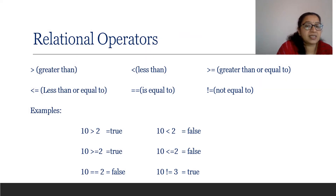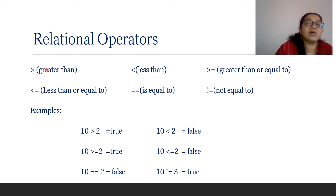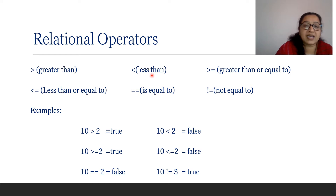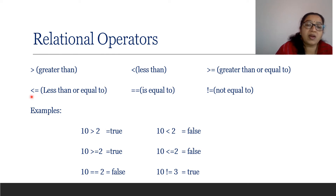Relational operators — we already discussed these in the last class. Relational means comparison; we can compare two numbers. The operators used for comparison are: greater than sign, less than sign, greater than or equal to, and less than or equal to. In maths you write the greater than sign with a bar underneath, but here the equal to is separate.